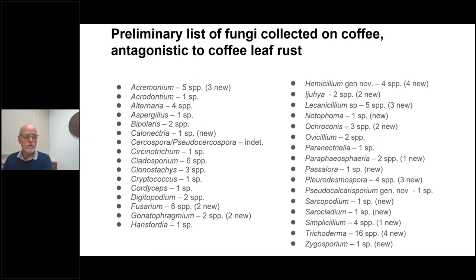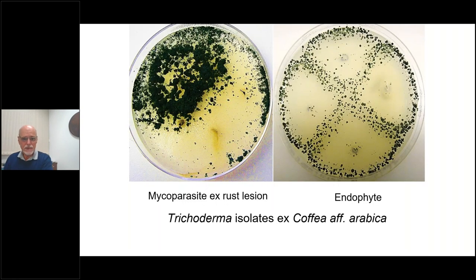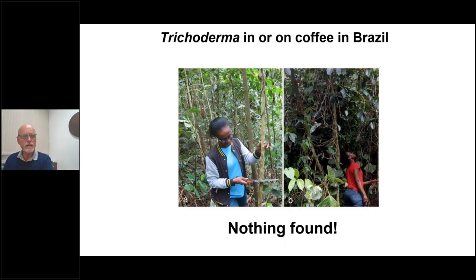Notably, coffee leaf rust is not the top problem in coffee plantations in Africa. Among the specimens we isolated, there were mycoparasites, and two examples are Trichoderma — a genus containing many species amongst the flagship fungi used in biocontrol all over the world. The list of Trichoderma we obtained was quite impressive: 16 different species, four of which were described as new.